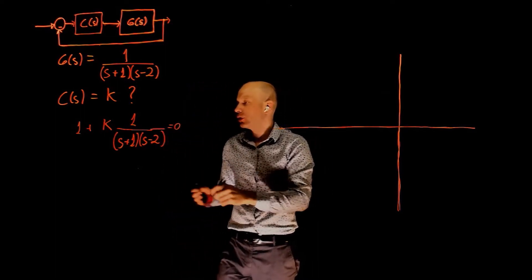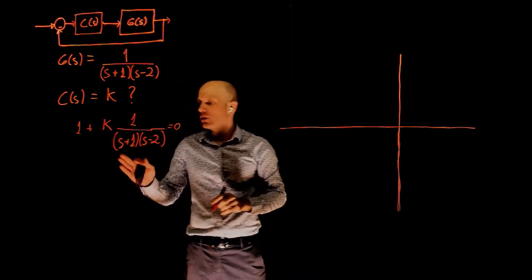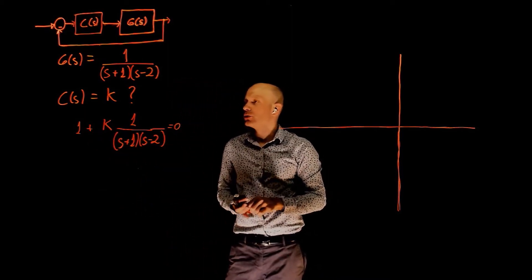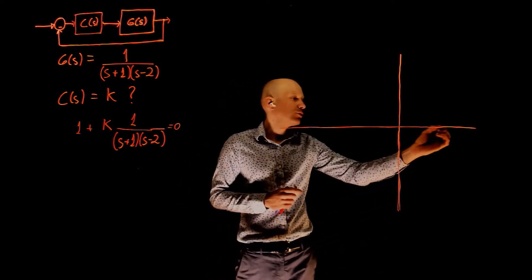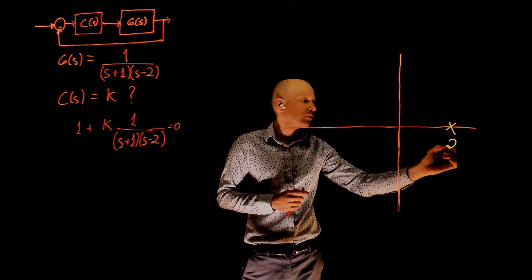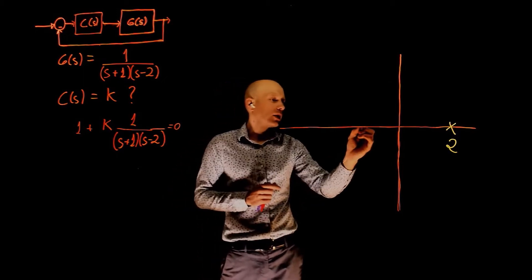This is the traditional root locus equation, and you can now proceed with the location of poles and zeros and then find the root locus. One of the poles is located at positive 2, and the other pole is at negative 1.